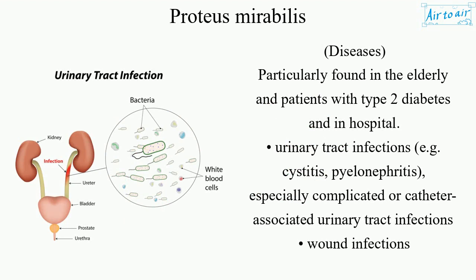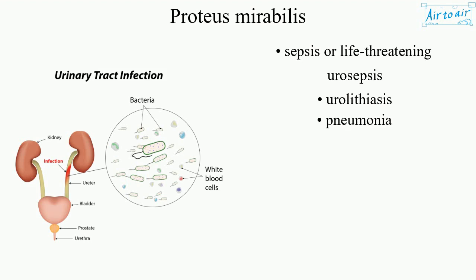Diseases include urinary tract infections, e.g. cystitis and pyelonephritis — especially complicated catheter-associated urinary tract infections — wound infections, sepsis or life-threatening urosepsis, urolithiasis, and pneumonia.